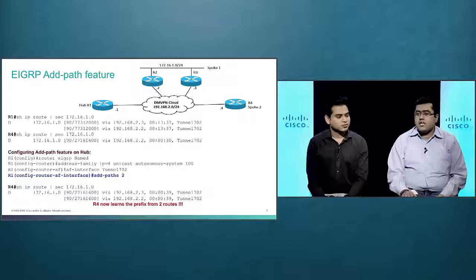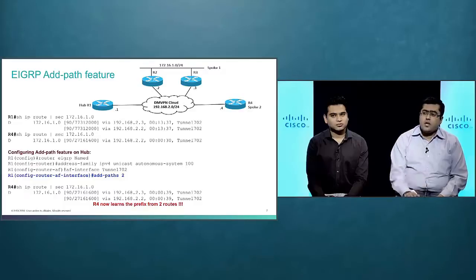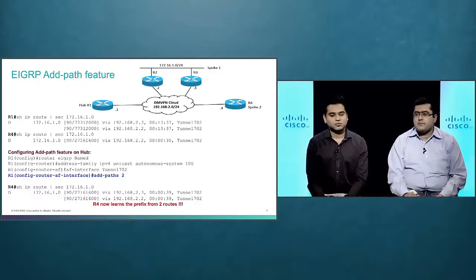To overcome this, there is a new feature called EIGRP add path. With this feature, if you configure a single command 'add-path 2', the hub can advertise multiple next hops in the EIGRP update packet. Once we have multiple next hops, the other spokes — in this case R4 — will also install two routes in the routing table. This allows load sharing over the spoke-to-spoke tunnels from spoke 2 to spoke 1. Prior to this feature, this could not be achieved in a straightforward way.